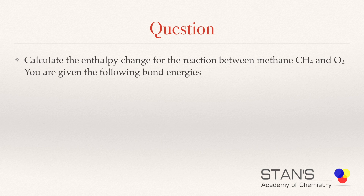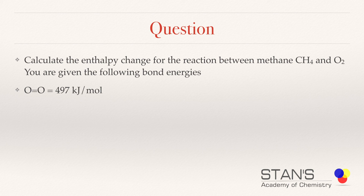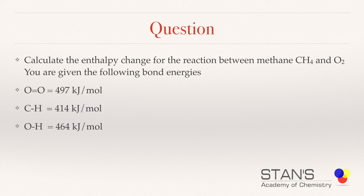Calculate the enthalpy change for the reaction between methane and oxygen. You are given the following bond energies. This reaction is a combustion reaction. The oxygen-oxygen double bond energy is 497 kJ/mol, the carbon-hydrogen bond energy is 414 kJ/mol, the oxygen-hydrogen bond energy is 464 kJ/mol, and the carbon-oxygen double bond energy is 740 kJ/mol. We are going to use these bond energies to calculate the enthalpy of reaction.